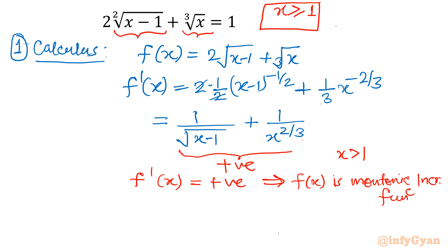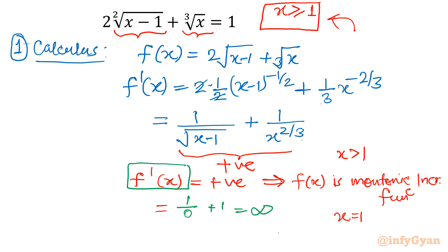Now what about x equal to 1? That point is in our domain. If we put x = 1 then the denominator gives us 0, so the derivative is infinity. This means that if you draw a tangent at that point, it is parallel to the y-axis. It is still a monotonic increasing function, but the tangent at x = 1 is parallel to the y-axis.